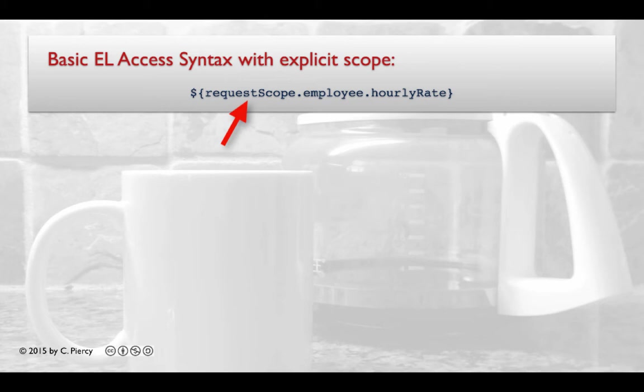For example, if the Java bean is stored as request state, we would use the keyword requestScope, followed in dot notation by the Java bean name and then the property. So with this example, we are getting the same hourly rate from the employee Java bean, which is stored as a request attribute.